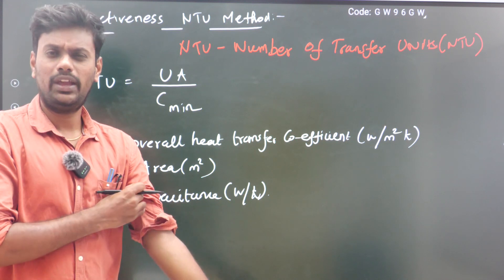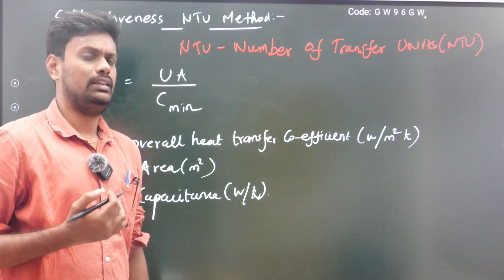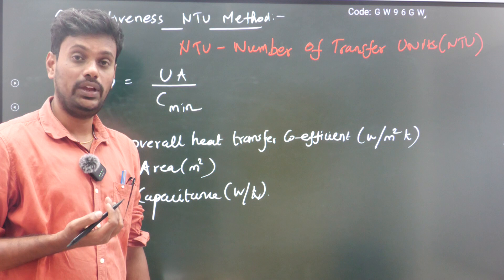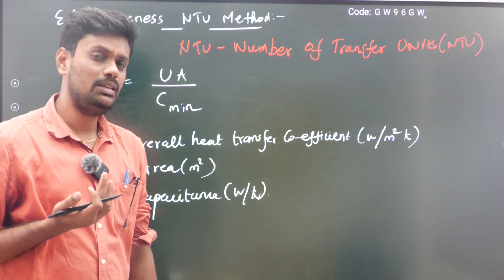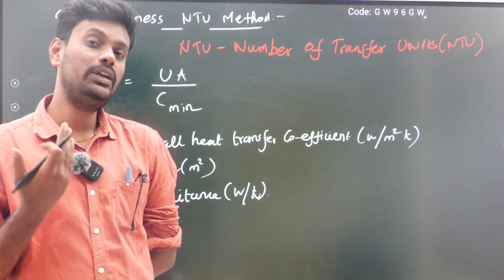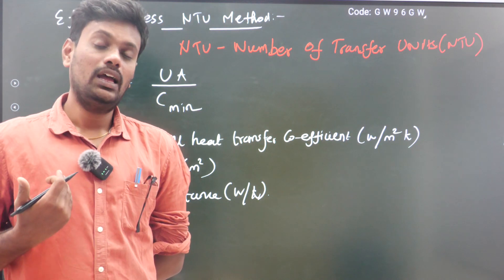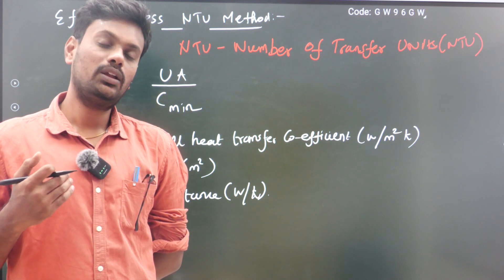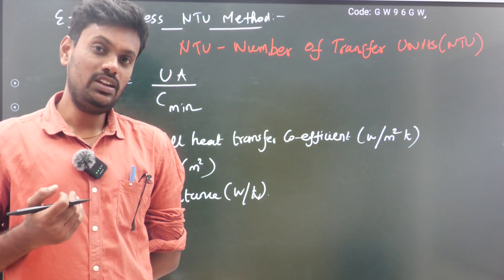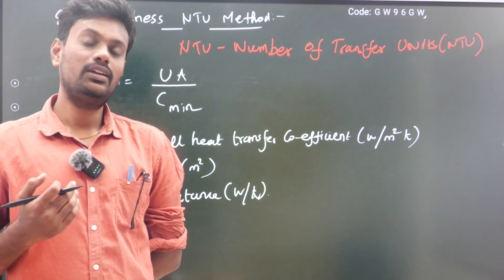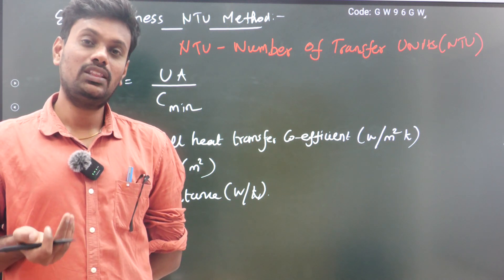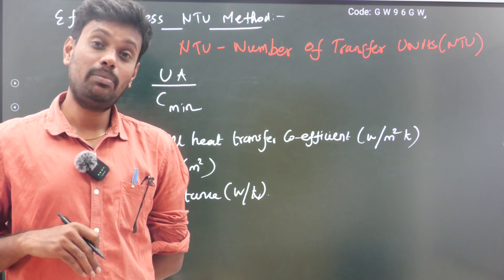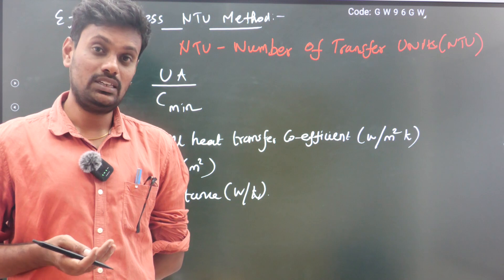C is the capacitance of the fluid — it represents the capacity of the fluid, meaning how much heat the fluid can store within itself. If a fluid has more capacitance, it stores more heat, resulting in less heat transfer. Lesser the capacitance, higher the heat transfer; higher the capacitance, lesser the heat transfer.